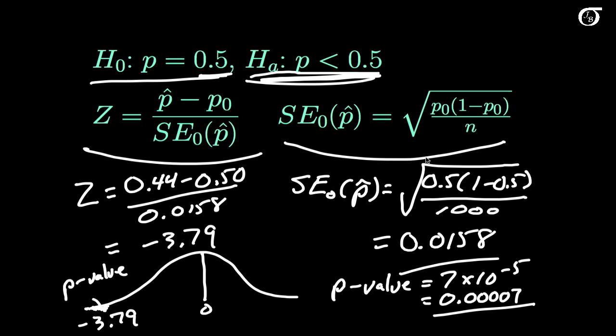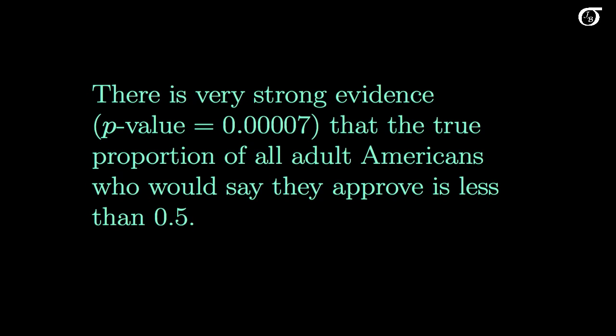Very strong evidence against this null hypothesis, and in favor of this alternative hypothesis. So there is very strong evidence that the real value of p, the parameter for the entire population, is actually less than 0.5. What does that mean in the context of this problem? It means that there is very strong evidence, with that p-value of 0.00007, that the true proportion of all adult Americans who would say they approve is actually less than 0.5.